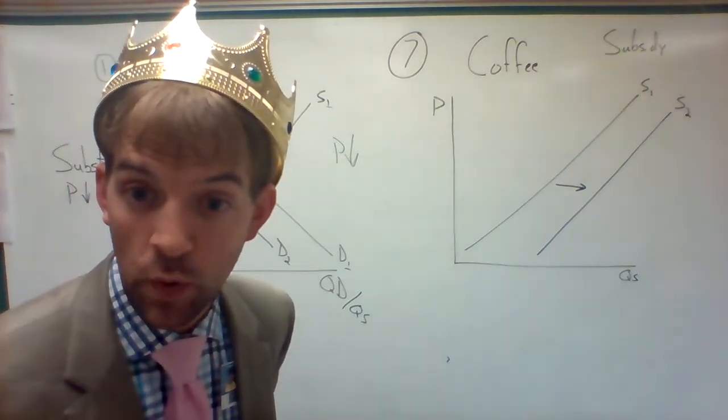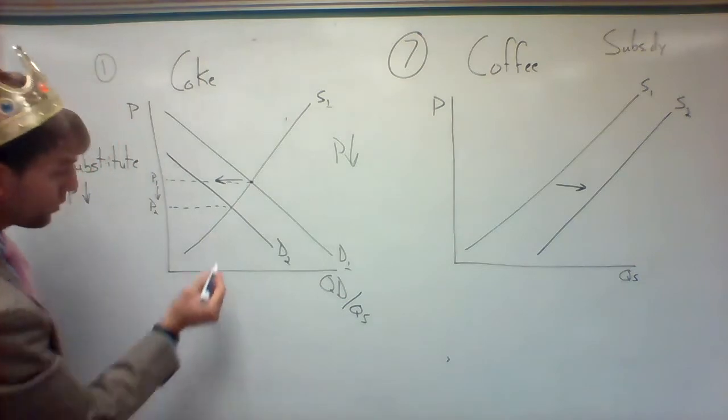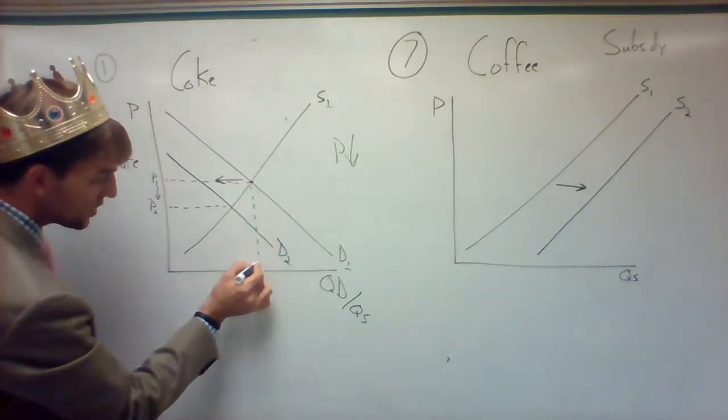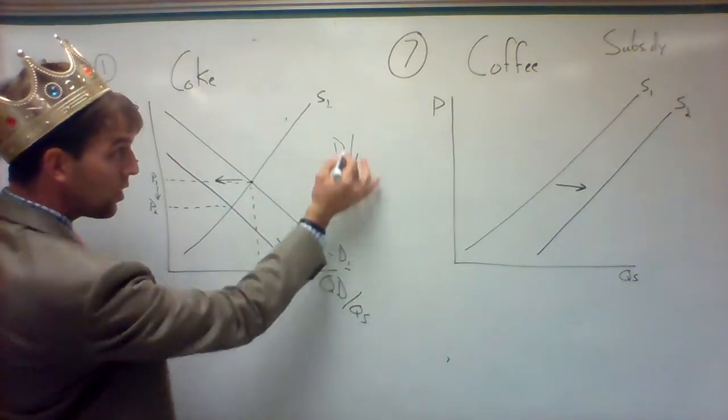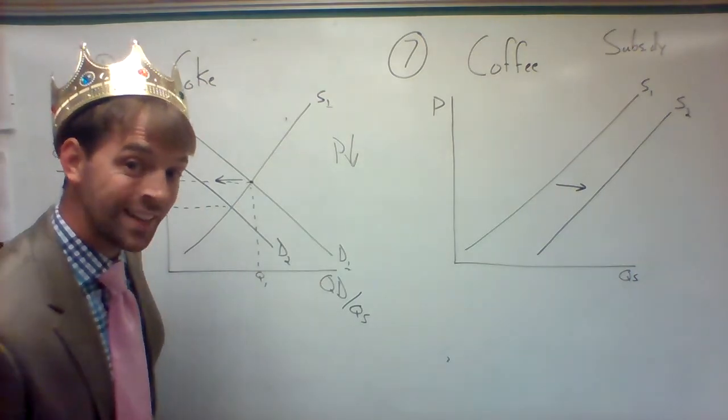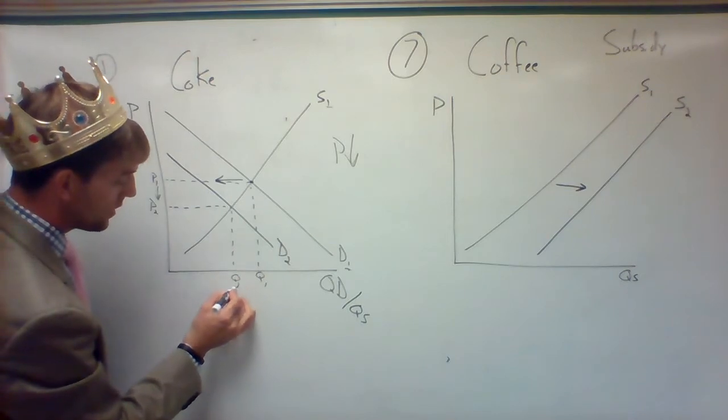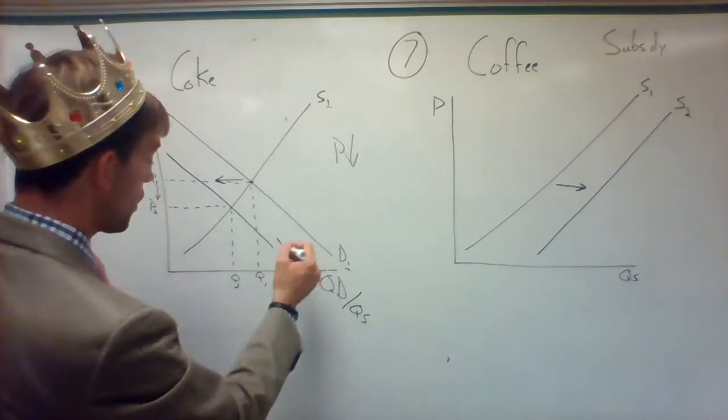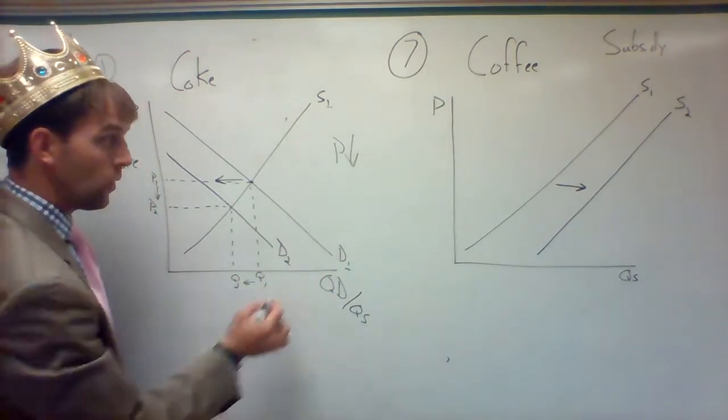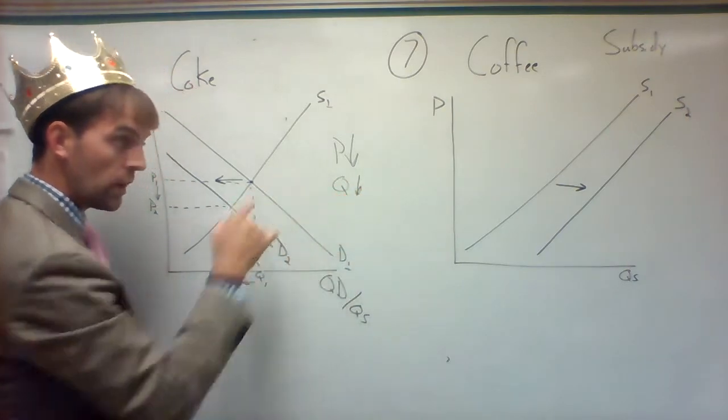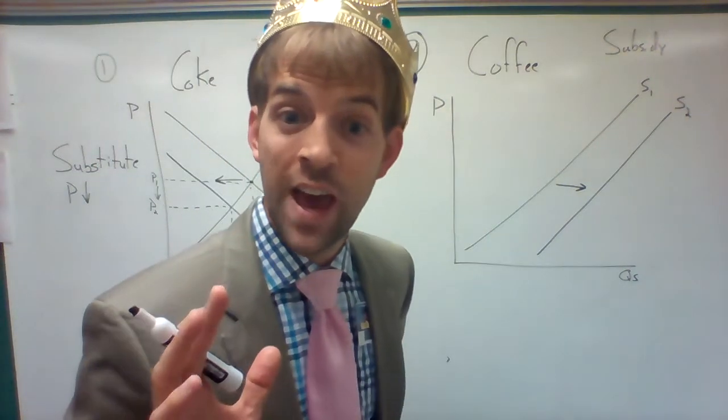Look what happens to the quantity. Same thing: go to D1/S1, that's your original quantity sold. Do the same thing. Your quantity went down and your price went down. Same thing, come over here—you're going to do it, but you're going to add the demand curve.